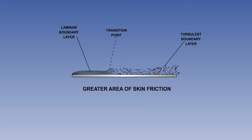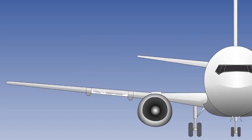There are two factors that can affect the position of the transition point. First, the surface condition. The thin laminar layer is very sensitive to any irregularities.